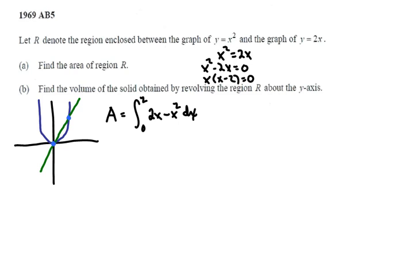We have the integral from 0 to 2 of 2x minus x squared dx, and we integrate that. That's 2x to the second over 2, which is just x squared, then minus x to the 3 over 3, with limits of integration from 0 to 2.